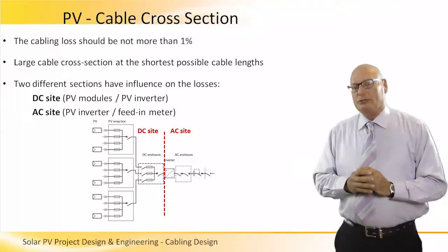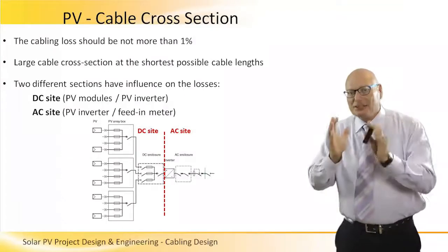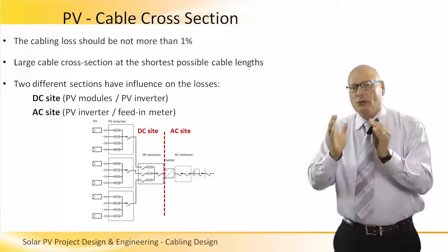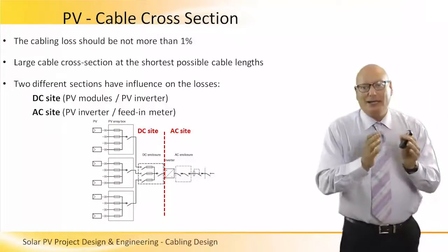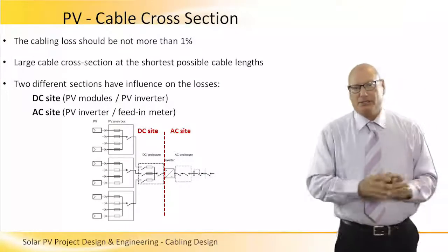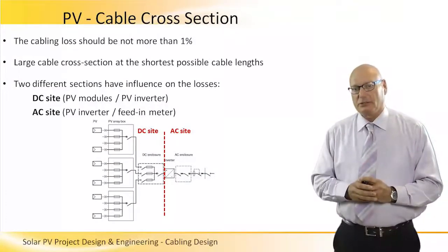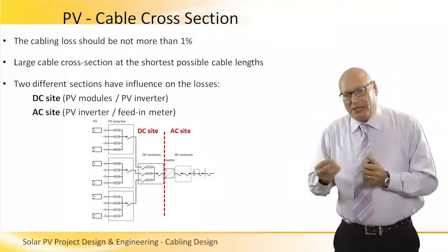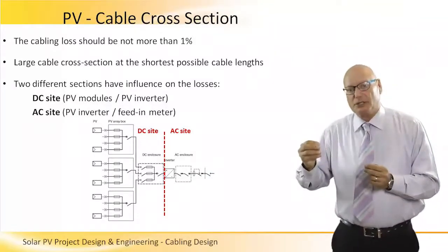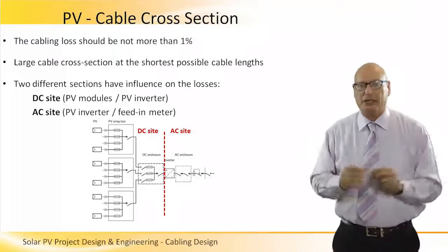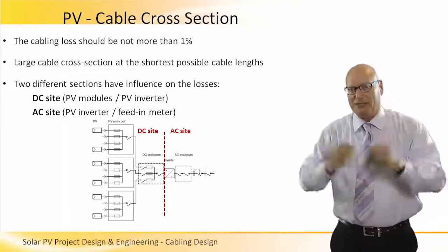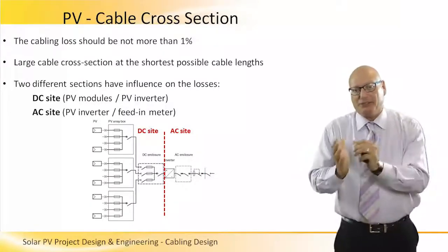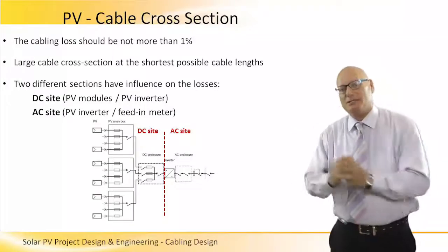Now, cable cross-section. As a target, we would like to have the loss less than 1% because of the cables. Ideally, we want the largest cable cross-section at the shortest possible cable length. We have two sides: the DC side and the AC side.